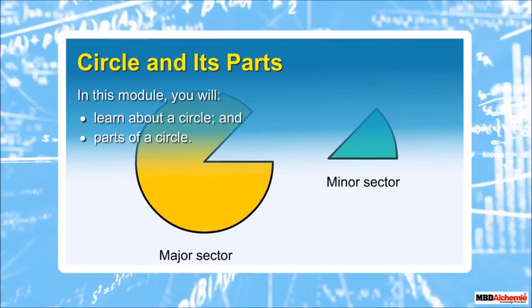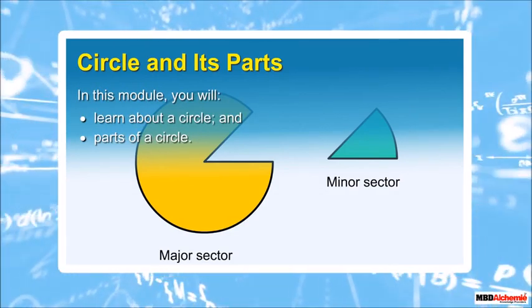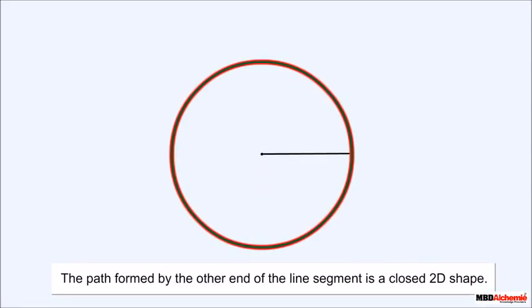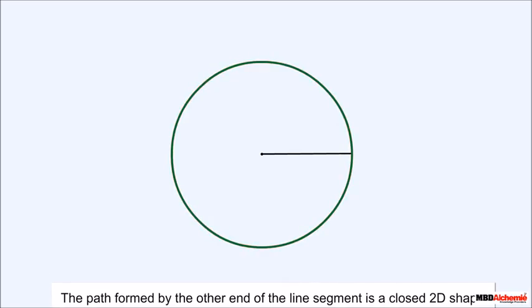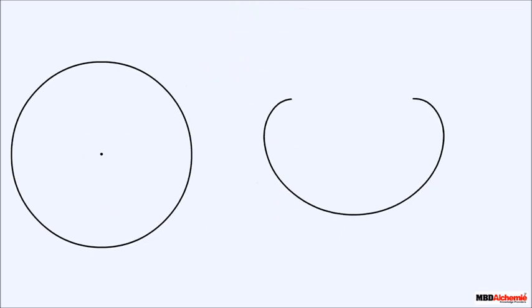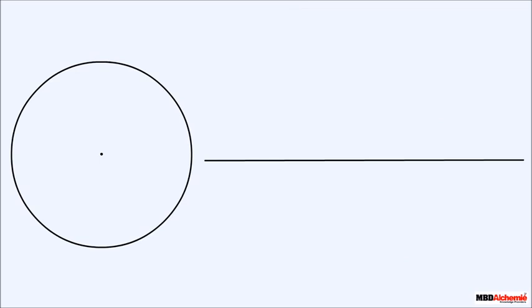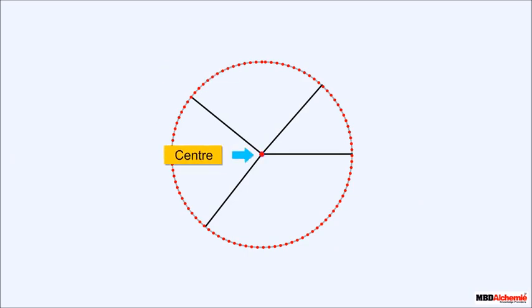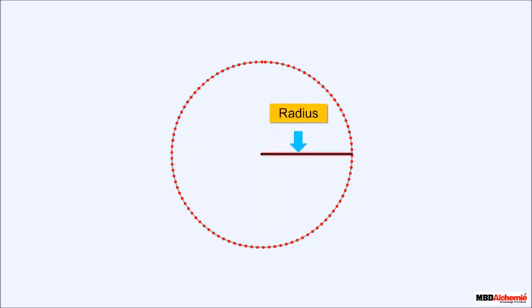Circle and its parts. In this module you will learn about a circle and parts of a circle. We are all familiar with circles. Suppose we take a line segment and fix it from one end and rotate it — the path formed by the other end is a closed 2D shape called a circle. A circle is a collection of points which are at a fixed distance from a fixed point. This fixed point is called the center of the circle, while this fixed distance is called the radius.